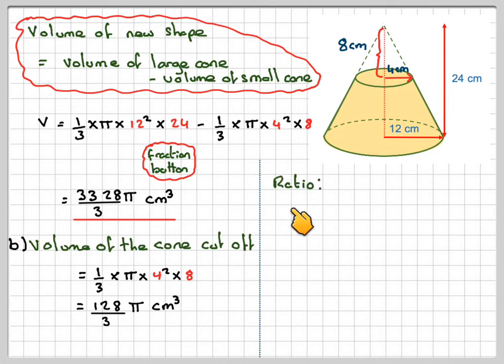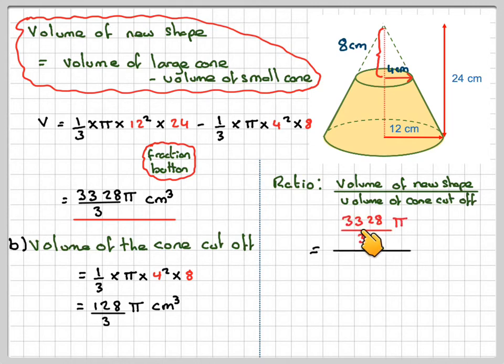And therefore the ratio of the volume of the new shape, so this one here, divided by the volume of the cone cut off which will be this one here. So we'll put the exact answer as 3328 over 3 times π divided by 128 over 3 times π.